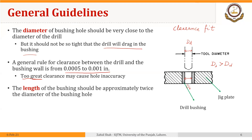The length of the bushing should be approximately twice the diameter of the bushing. This length-to-diameter ratio is necessary to provide sufficient strength to the bushing.